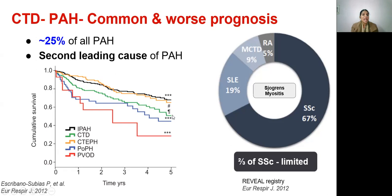The diseases constituting connective tissue disease PAH are scleroderma in the majority, followed by SLE, MCTD, RA; Sjogren's and myositis are rarer causes. Of scleroderma, two-thirds are of the limited subtype, and this could cause the diagnosis to be missed in some patients.